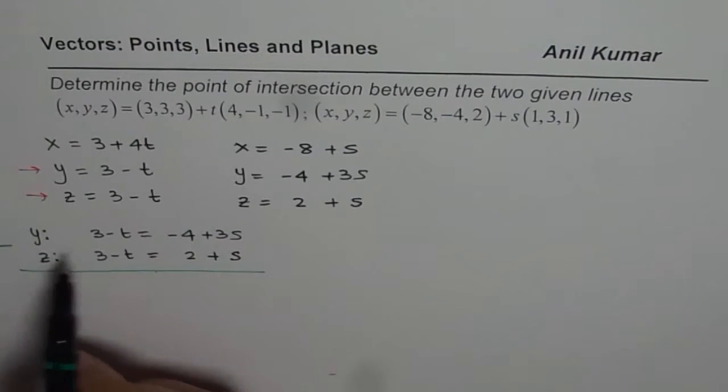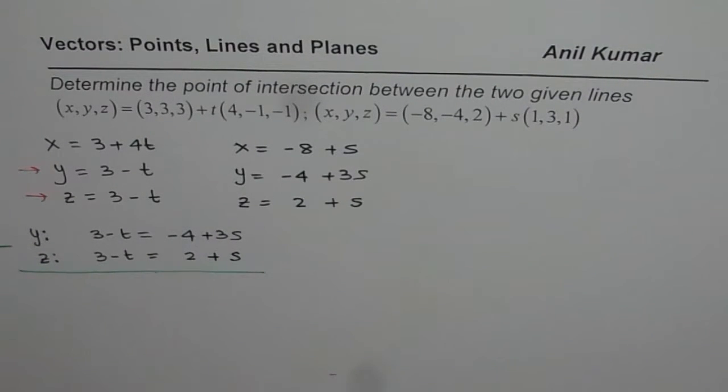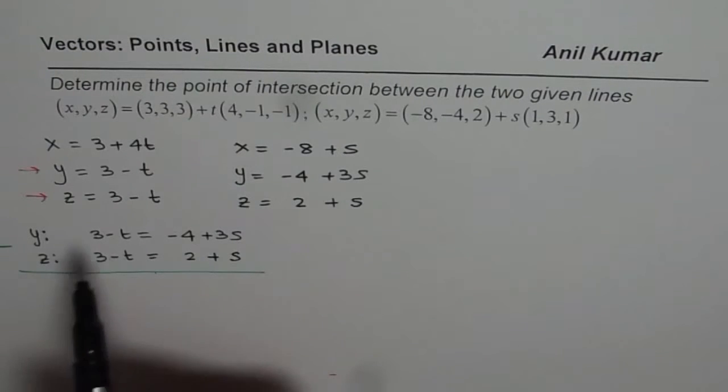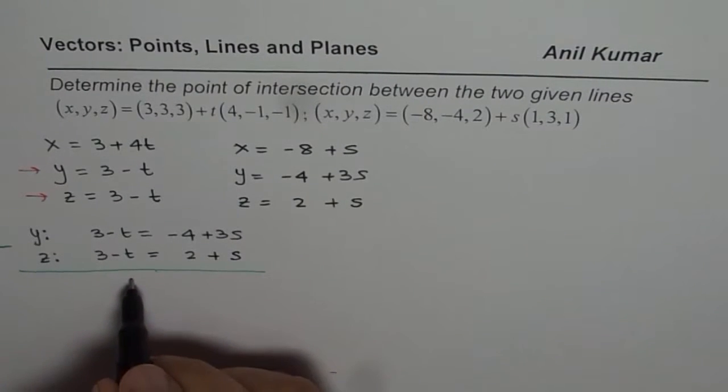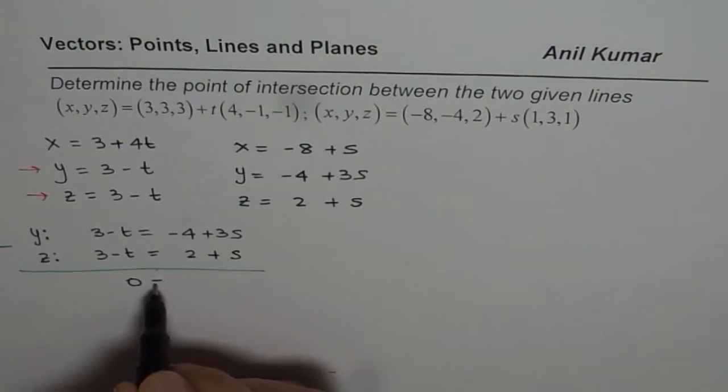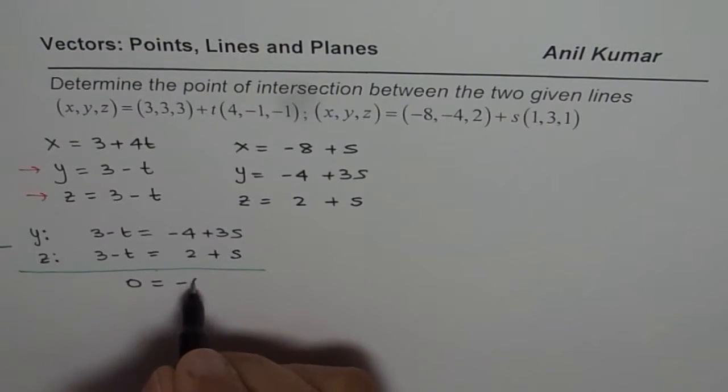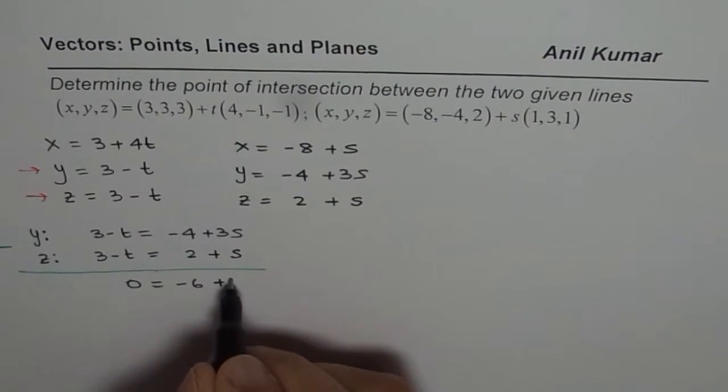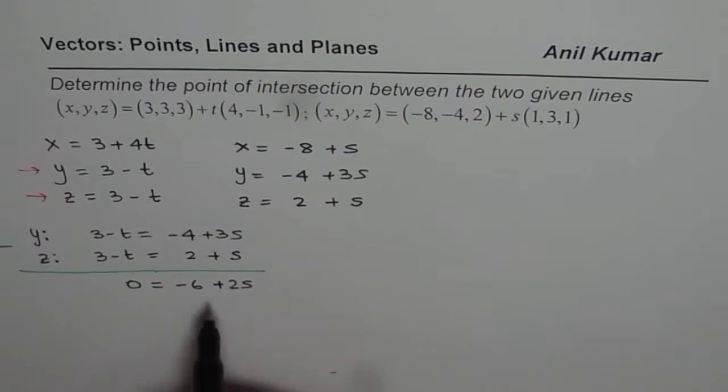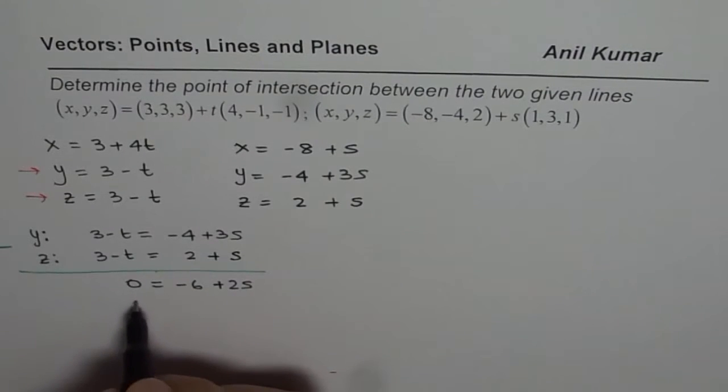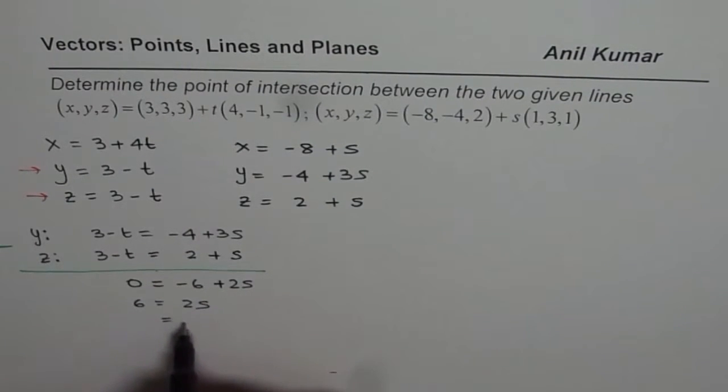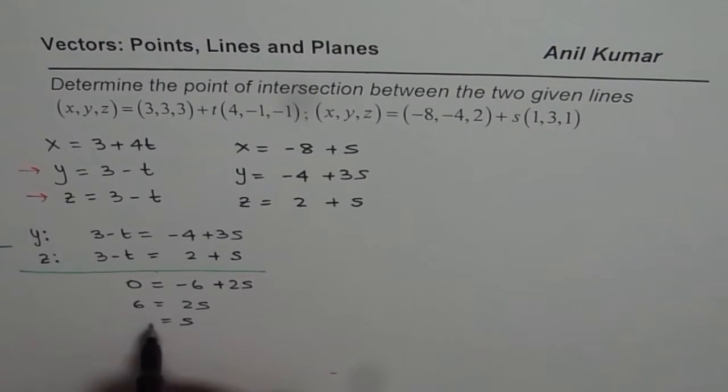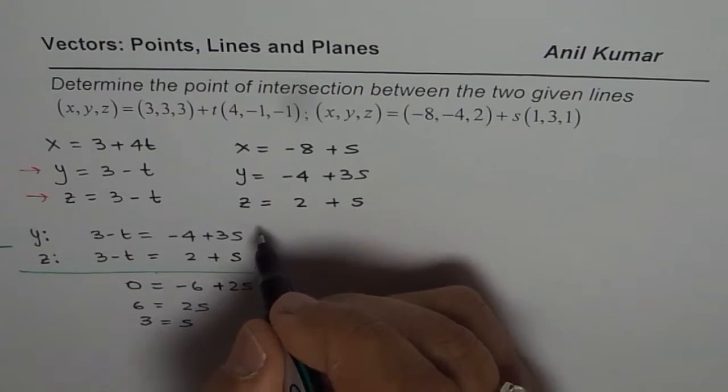So if I subtract them, what do I get? 3 minus 3, t minus t is 0, so we eliminate t altogether. And here, if I do, I get minus 6 and 3 minus 1 is 2 plus 2s. From here we can solve for s, which is 6 equals to 2s, or s equals to 6 divided by 2, which is 3. So we found the value of s, so it was kind of simpler.